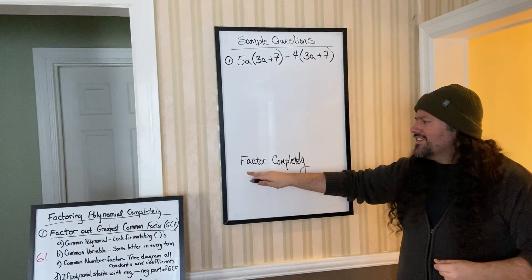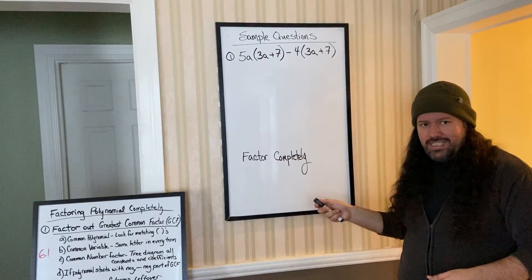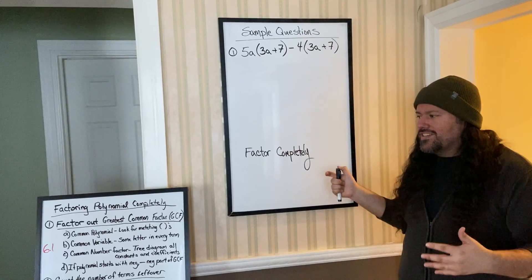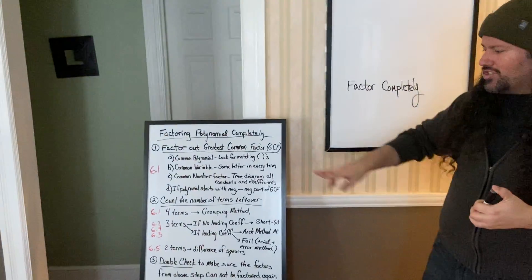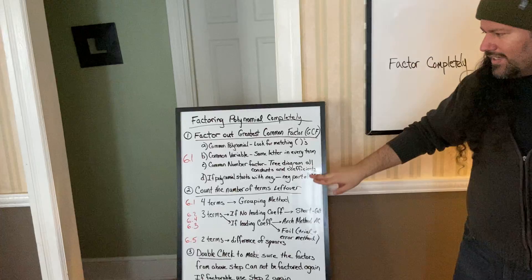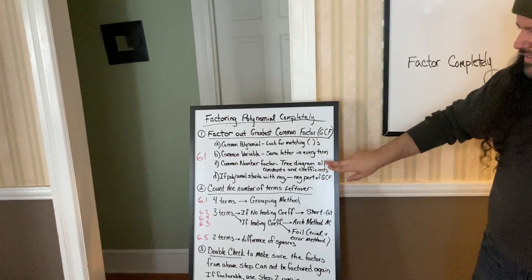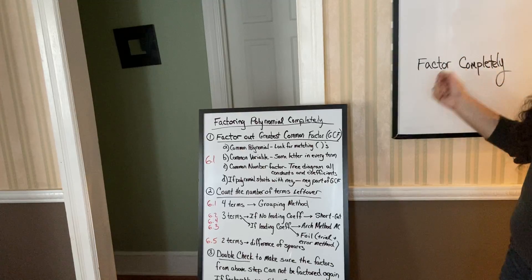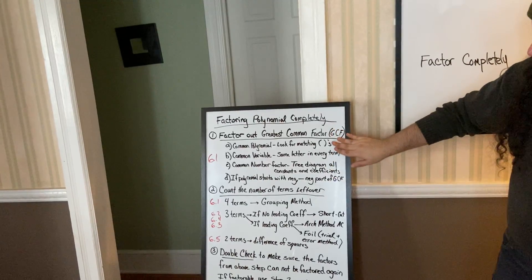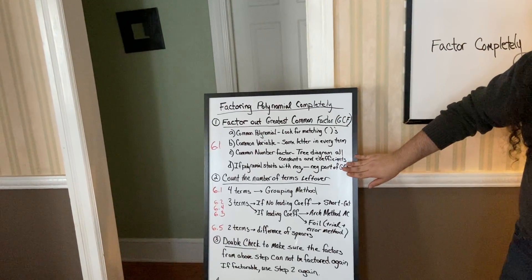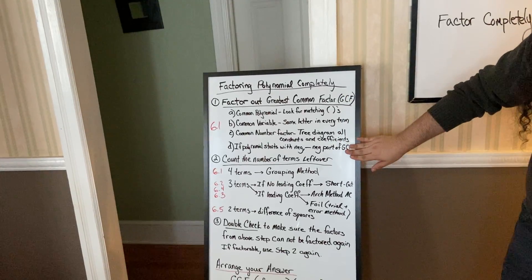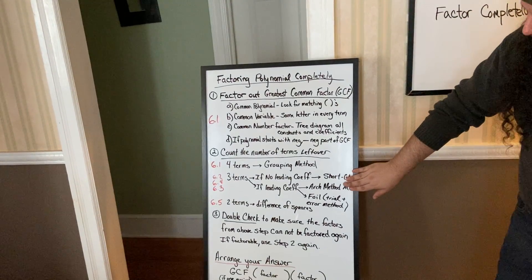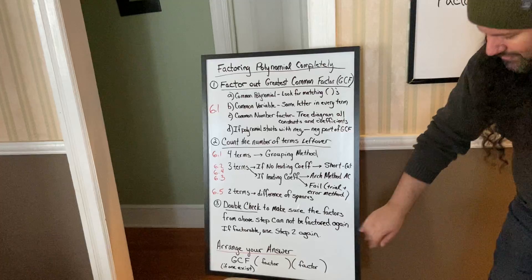The directions will be very vague. It'll just say factor completely. So anytime it says factor completely, we're going to use this chart. So far, we've only learned step one. Luckily, this one only has step one. But when we get to harder problems, you'll have to check 6.1, then step two, and step three as well.